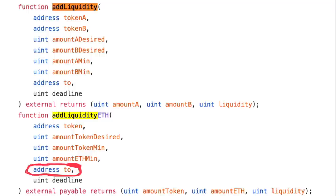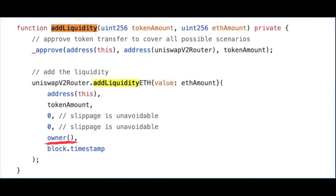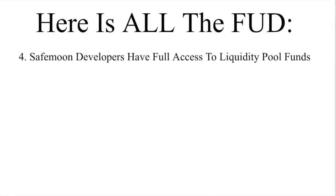Liquidity tokens allow whoever owns them to pull their liquidity out of the pool either in the form of BNB or SafeMoon. As we see here, the liquidity tokens do go to the owner of this contract — the developers. They have been incredibly open and honest about this, and all movement of these liquidity tokens can be tracked openly by anyone. If you are investing in a new project with anonymous developers and a questionable roadmap, you should be terrified of developers owning liquidity tokens, as they could sell these tokens and effectively rug pull their community.